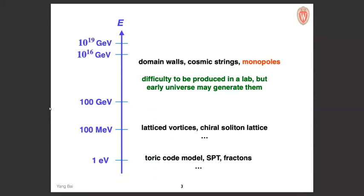I started thinking about what kind of domain wall can change the early universe dynamics — specifically what type of domain wall might change the QCD phase transition. There is some anomalous Z_N or Z_2 symmetry under QCD. Maybe we could have some initial domain wall where there would be regions with θ_H=0 and θ_H=π, and in the θ_H=π region the QCD phase transition could be different — possibly first order.